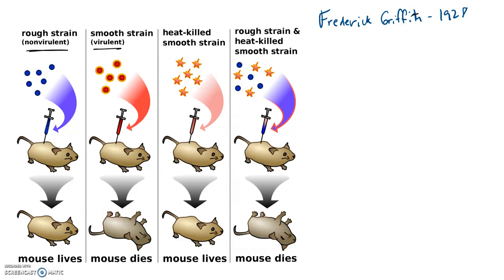These are named the rough strain and the smooth strain simply because of the way that the cells appeared under the microscope. What he did first, he took the deadly smooth strain, the one that was known to cause death to the mice, and he heated them up to high temperatures so that the bacterial cells were then no longer living. He injected these heat-killed bacterial cells into the mouse and saw that they were no longer able to cause disease and death in the mouse.